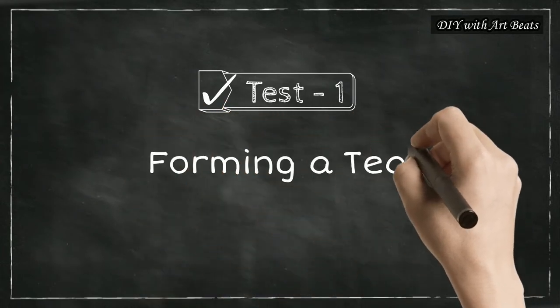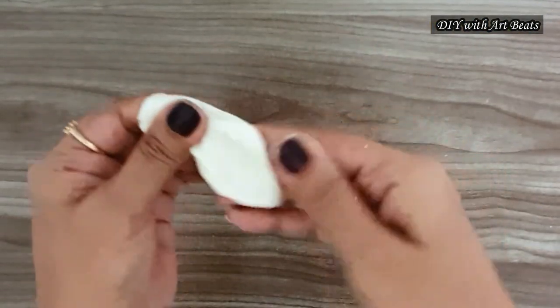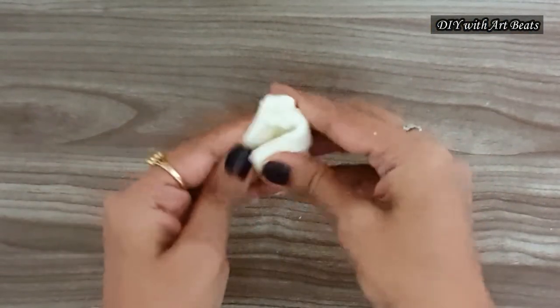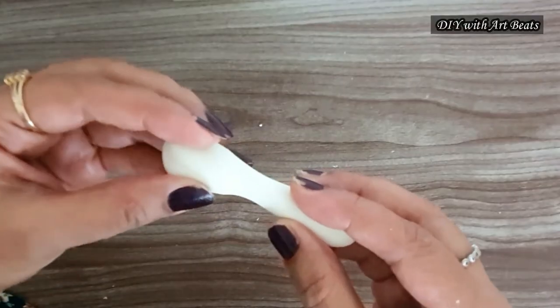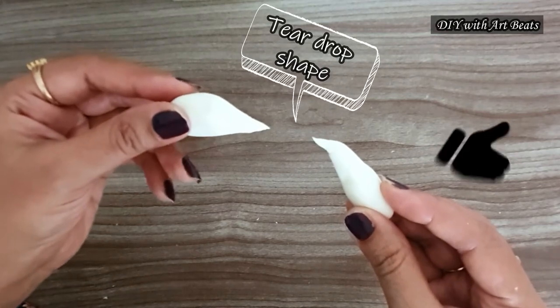Test number 1. It should form a teardrop shape. Take a small amount of the clay and knead it first. Now pull it apart. It should form a teardrop shape like this.